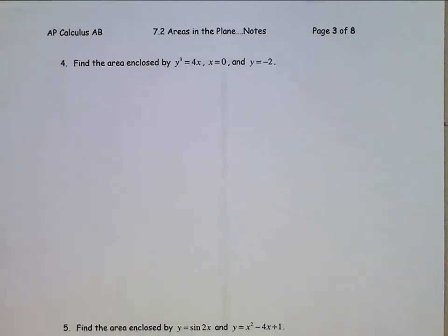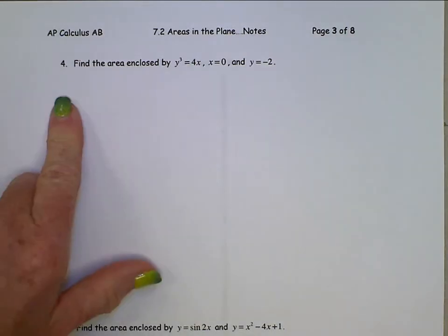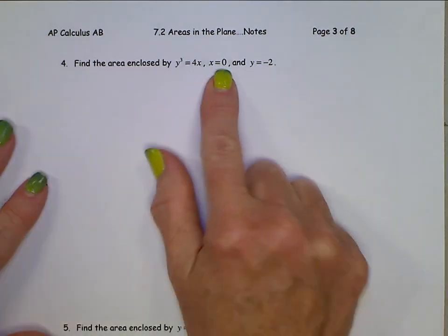AP Calculus, section 7.2, page 3. We are going to find the area enclosed by y cubed equals 4x, x equals 0, and y equals negative 2.